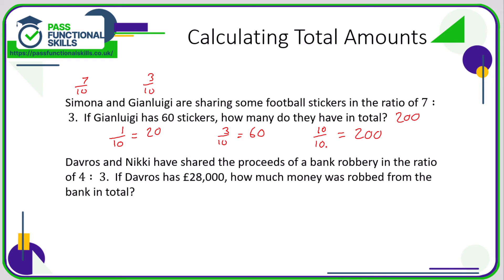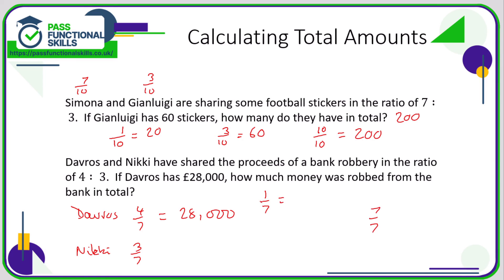In the next example — a bank robbery scenario — Davros receives four-sevenths and Nikki three-sevenths of the total, because four plus three is seven. We're told that four-sevenths equals twenty-eight thousand pounds and we want the total, which is seven-sevenths. First I find one-seventh: twenty-eight thousand divided by four is seven thousand. So four-sevenths is twenty-eight thousand, one-seventh is seven thousand, and seven-sevenths — the full amount — is forty-nine thousand pounds. That was the total amount robbed from the bank. These last examples are definitely the trickiest; the difficulty is just moving from one fraction to another.